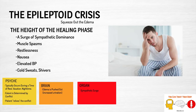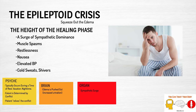The epileptoid crisis is always the turning point of the healing program. During conflict activity, the pendulum is swung all the way to sympathetic mode, and when you move into healing, you're all the way into parasympathetic mode. The epileptoid crisis is a sympathetic stress push that gets the pendulum swinging back and forth normally. This is when the swelling has reached its maximum point, and there are some muscle spasms, restlessness, maybe nausea, elevated blood pressure, cold sweats, and shivers. This will typically happen during a period of rest — early hours of the morning, maybe when you're on vacation — because that's a sign your body is fully relaxed and ready to squeeze out this excess edema.